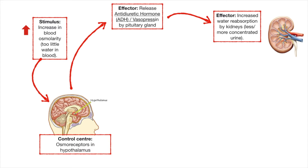Think about anytime you've been dehydrated — you probably don't go pee as often. Your kidneys are producing less urine, and your urine, when it is produced, is much more concentrated, less watery, and in lesser volume. This is the result of antidiuretic hormone.